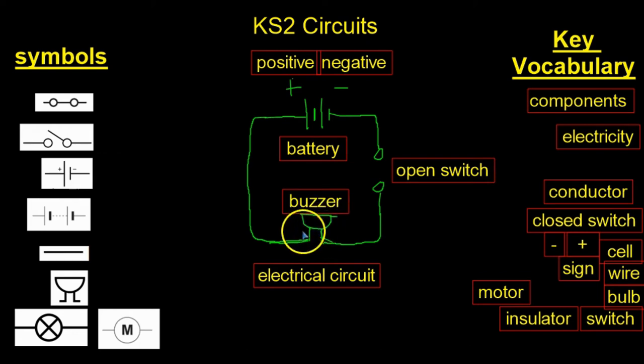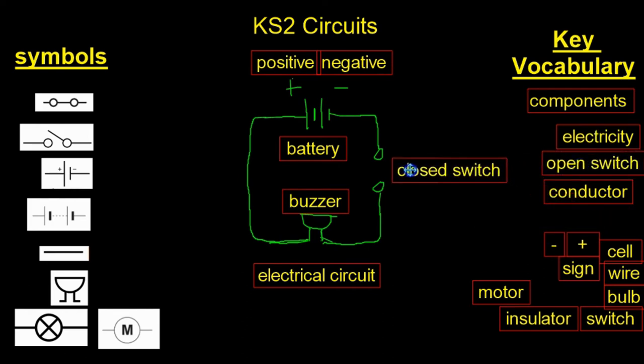Now, what do you think would happen if we close this switch? We made it back into a closed switch. So I've closed the switch. What would happen if I added another buzzer? Instead of one buzzer, I have two buzzers. What would happen if I didn't change the battery and it's still a closed switch, and I didn't change anything else in the circuit? I didn't add or take away anything but I just added one more buzzer. What do you think would happen?